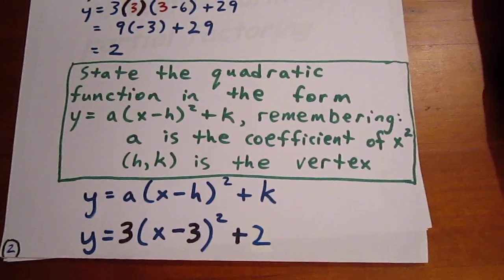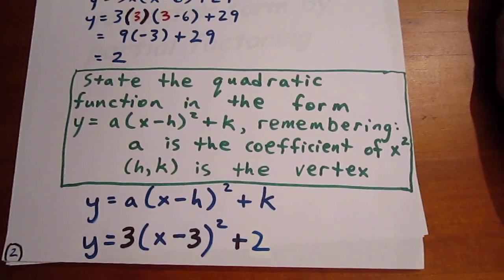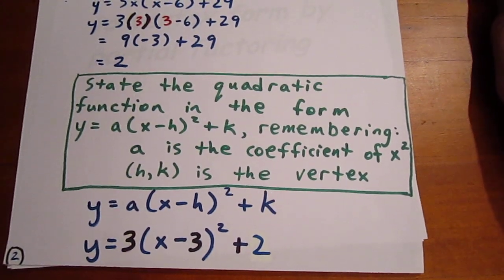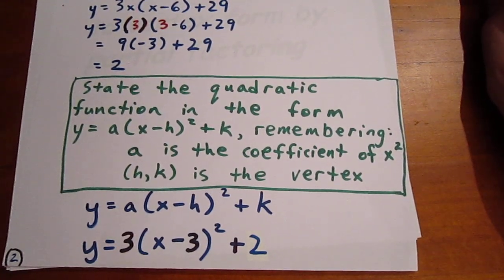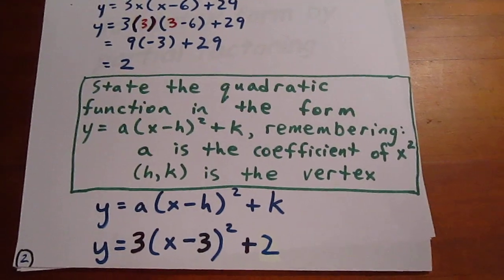And so what we are able to do is state that the equation of the quadratic function in vertex form is 3 times x minus 3 quantity squared plus 2.